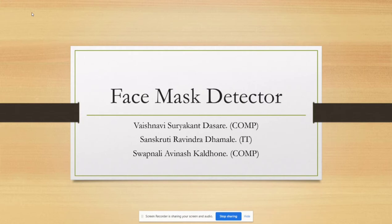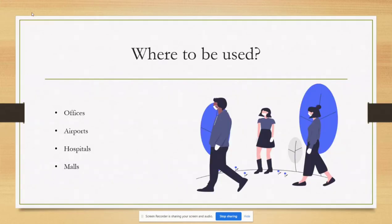As we all know, our country is going to be in the unlocking phase in the near future, and there are some authorities who would want to protect their premises and make it a safe place to work in for their employees. Such authorities can be hospitals, offices, airports, schools, colleges, malls, etc.